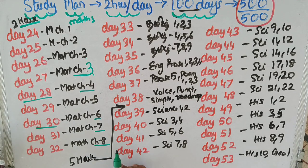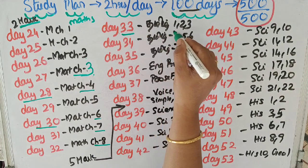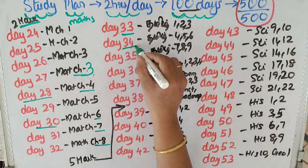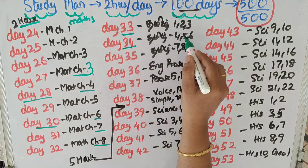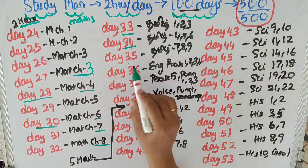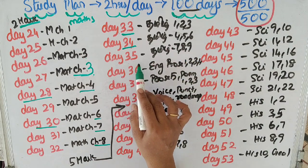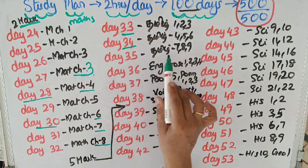Day 33: Tamil lessons 1, 2, 3 - 2 marks. Day 34: Tamil lessons 5, 6 - 2 marks. Day 35: Tamil lessons 7, 8, 9 marks. So Tamil 1 through 9 covered in 2 marks.